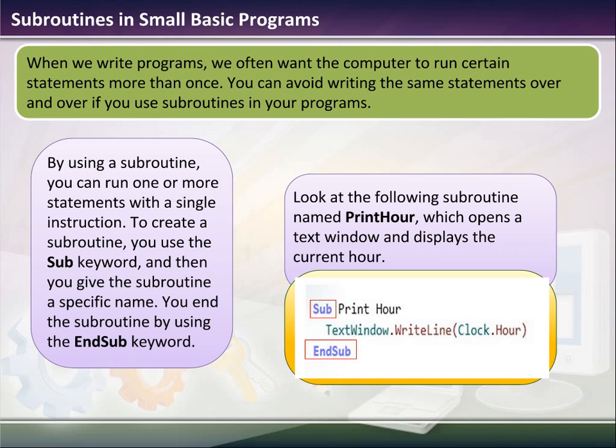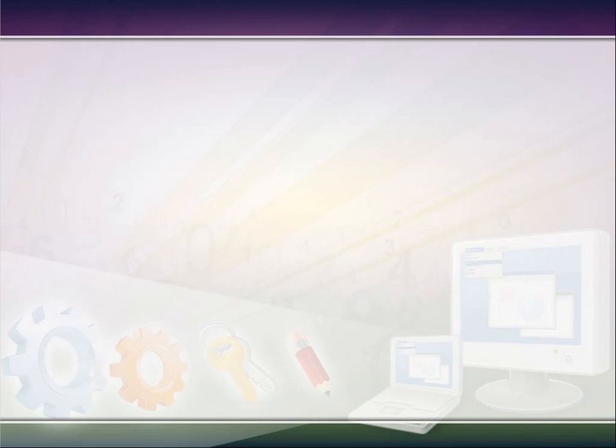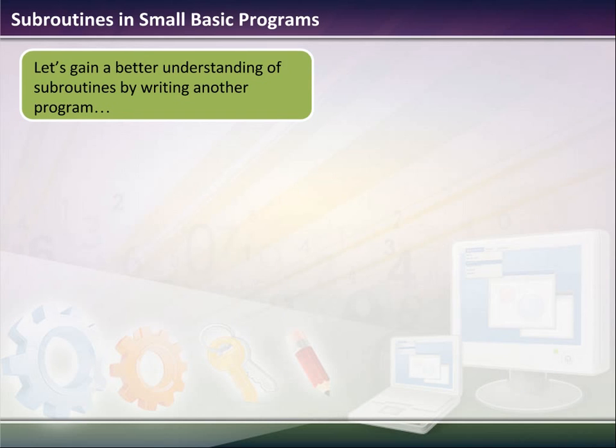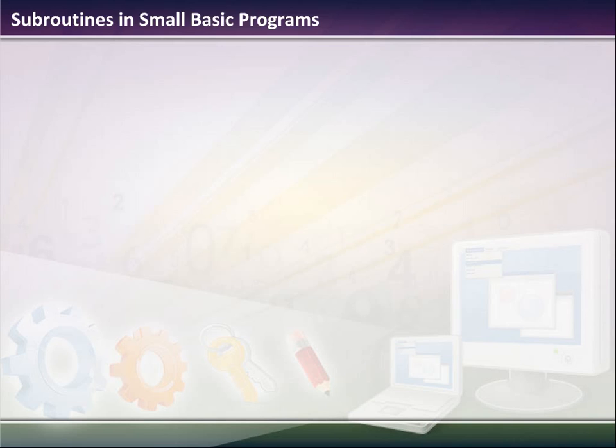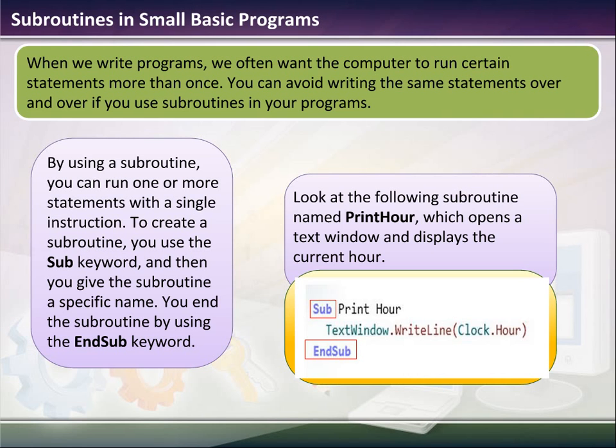Now look at the following routine: Sub PrintHourText, TextWindow.WriteLine(Clock.Hour), EndSub. Let me explain what that would do. This is a little subroutine that maybe in the line before it I could put lineClockHour, and anywhere in the program I could put goto lineClockHour, and then it will automatically print what the clock hour is right then and there.